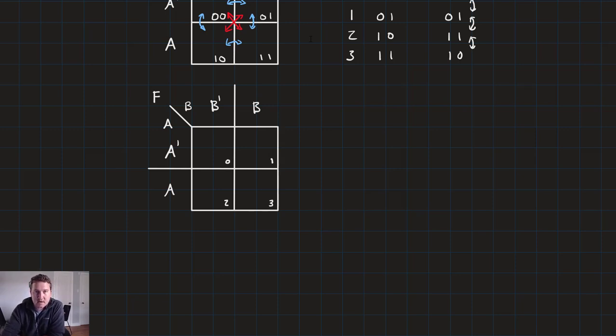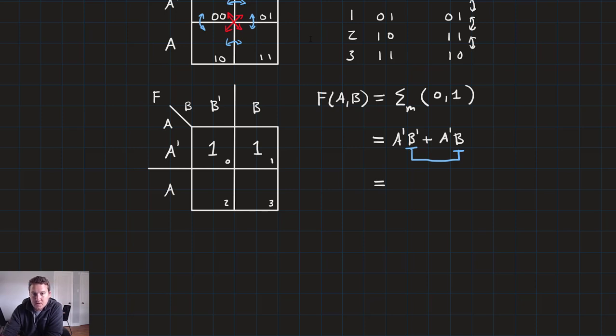So, now, let's go ahead and do an example. Let's take a look at something like this: F is a function of A and B and is equal to the sum of minterms 0 and 1. So, the way we apply this to a K-map is we take the cells that are numbered 0 and 1, and we just drop ones in that cell. So, before we do this, before we solve it with the K-map, let's go ahead and solve it with the Boolean algebra. So, we know that this sum of minterms is equal to A' and B', or A' and B.